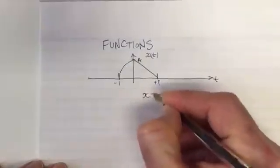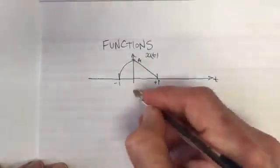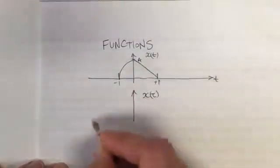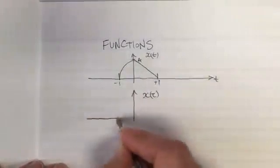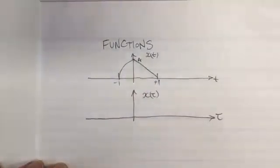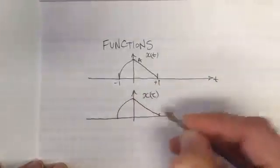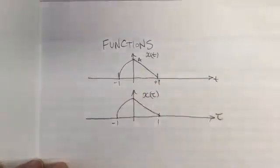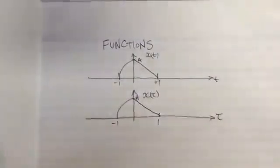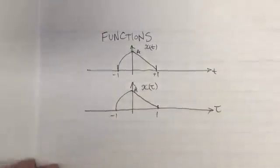Let's consider x of τ. What is x of τ? Well, it's the same function, and if you plot it with respect to τ it's going to be exactly the same — it goes between minus 1 and 1 and has a height of a. So just changing the variable inside the brackets does not change the shape of the function, and I think that's very important.